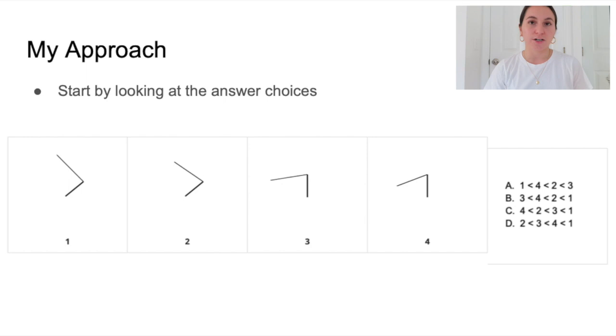In this approach, you will start by looking at the answer choices. If you look at the answers, you can see that the largest angle is either 3 or 1. So now I can look at the angles and compare angle 3 and angle 1. You can see that 1 is a bigger angle. So you can then go to your answer choices and eliminate those choices. So now you can have answer choices B, C, or D.